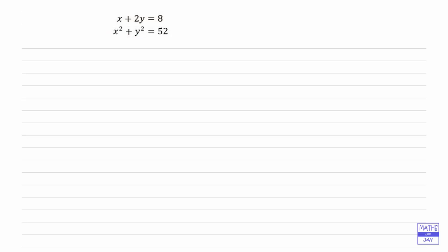The way we tackle these is that we start with the linear one and make either the x or the y the subject. It doesn't matter which one we choose, but in this case it's going to be easier to make x the subject because if we were to try and make y the subject we'd end up with a half x coming into it.